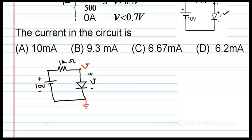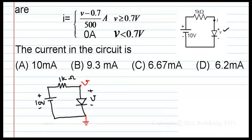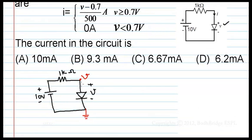If V is greater than 0.7 volt, then this much amount of current flows: V minus 0.7 by 500 amount of current flows. If V is less than 0.7, 0 current flows in this circuit.